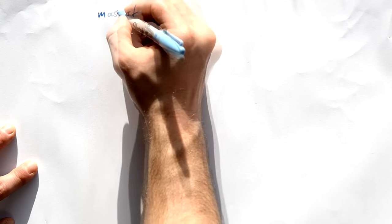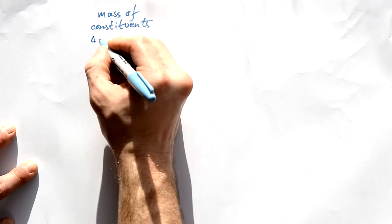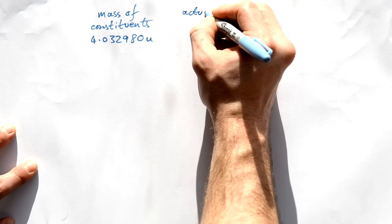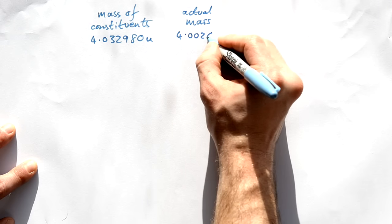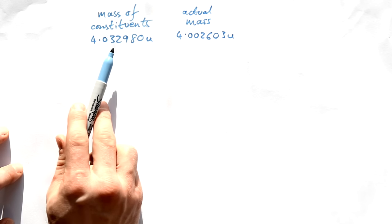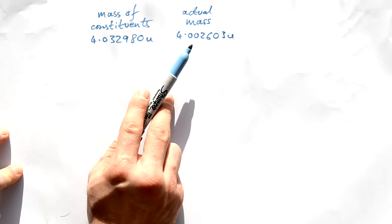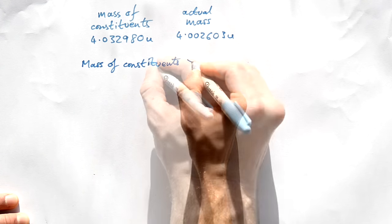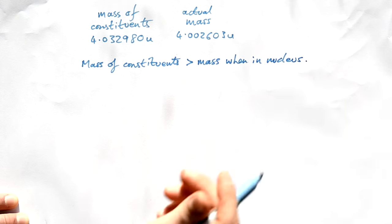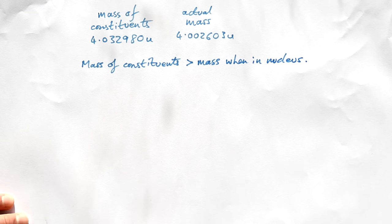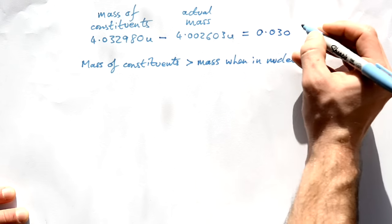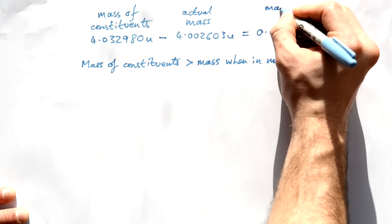So let's look at those numbers again. We have the mass of constituents and that was 4.032980U and we had the actual mass of a helium atom, that's 4.002603U. Now we can see that the constituents separated out weigh more than the actual mass of them put together in a helium atom and that's always the case. The total mass of the constituents is always going to be more than the mass when in a nucleus. We are talking about electrons as well, but we're mostly concerned about what's going on in the nucleus here. Now let's find out what the difference is. If we take one away from the other, we end up with 0.030377U. This is what we call the mass defect.